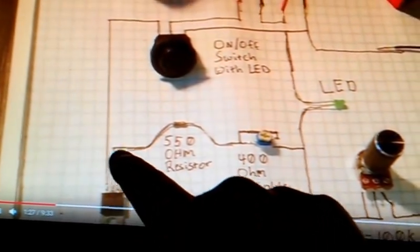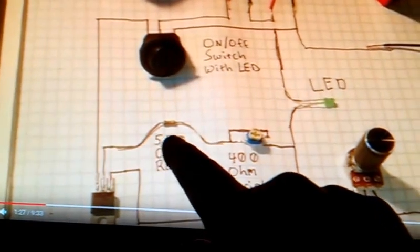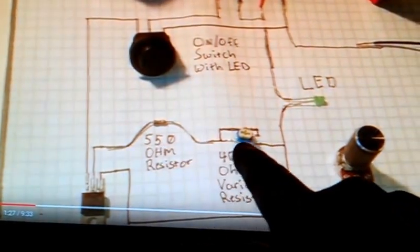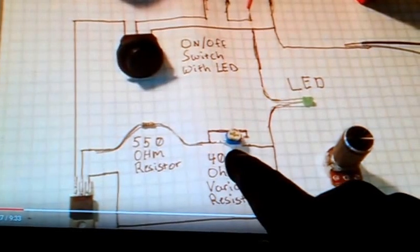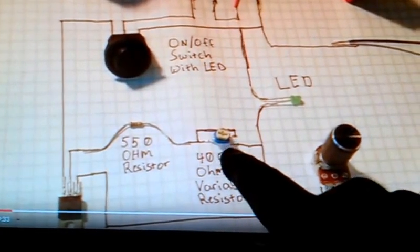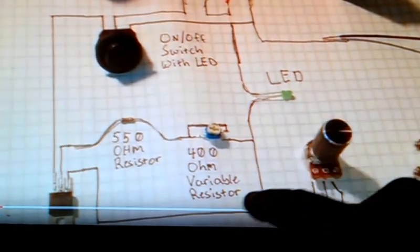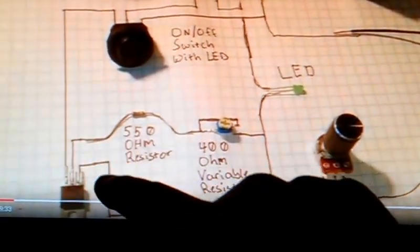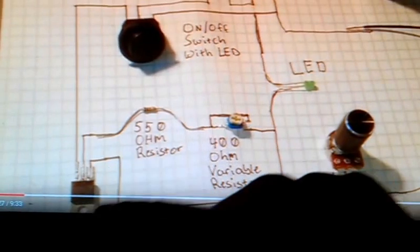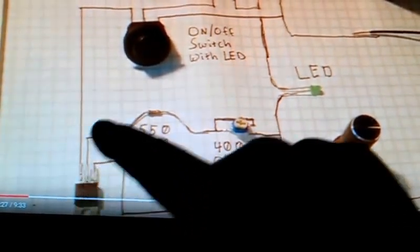So power goes into pin number three, then comes out of pin number two, through a 550-ohm resistor, and this is a variable resistor, or potentiometer, which is a 400-ohm, and then from there it goes back to pin number one, which regulates what comes out of pin number two.